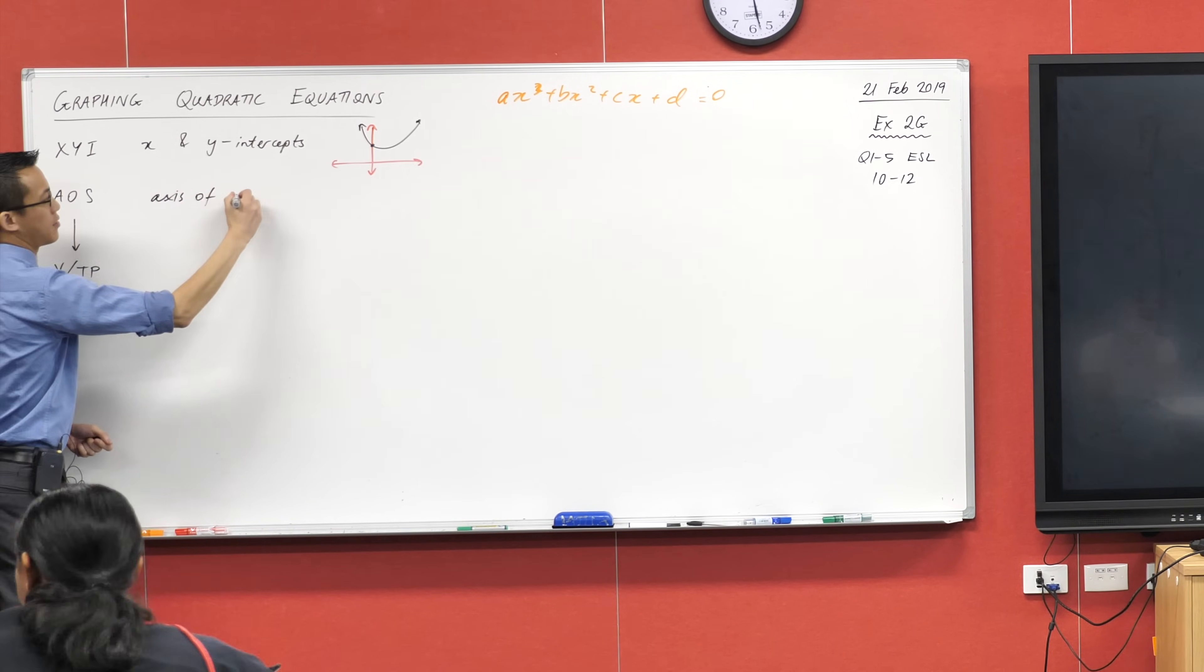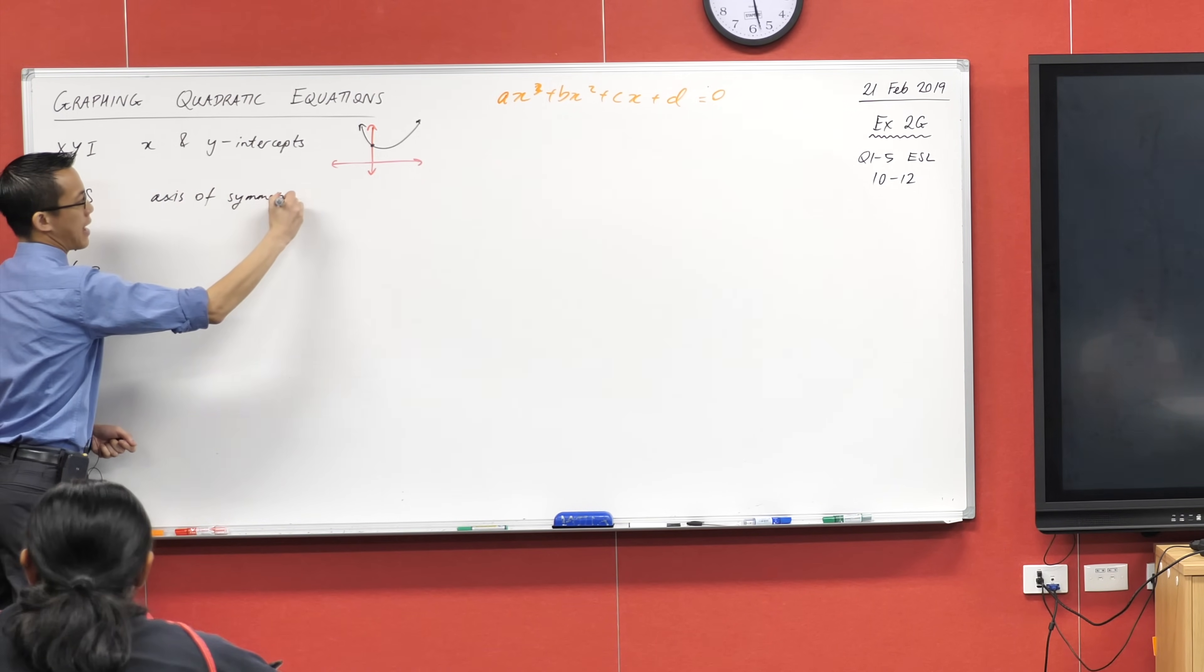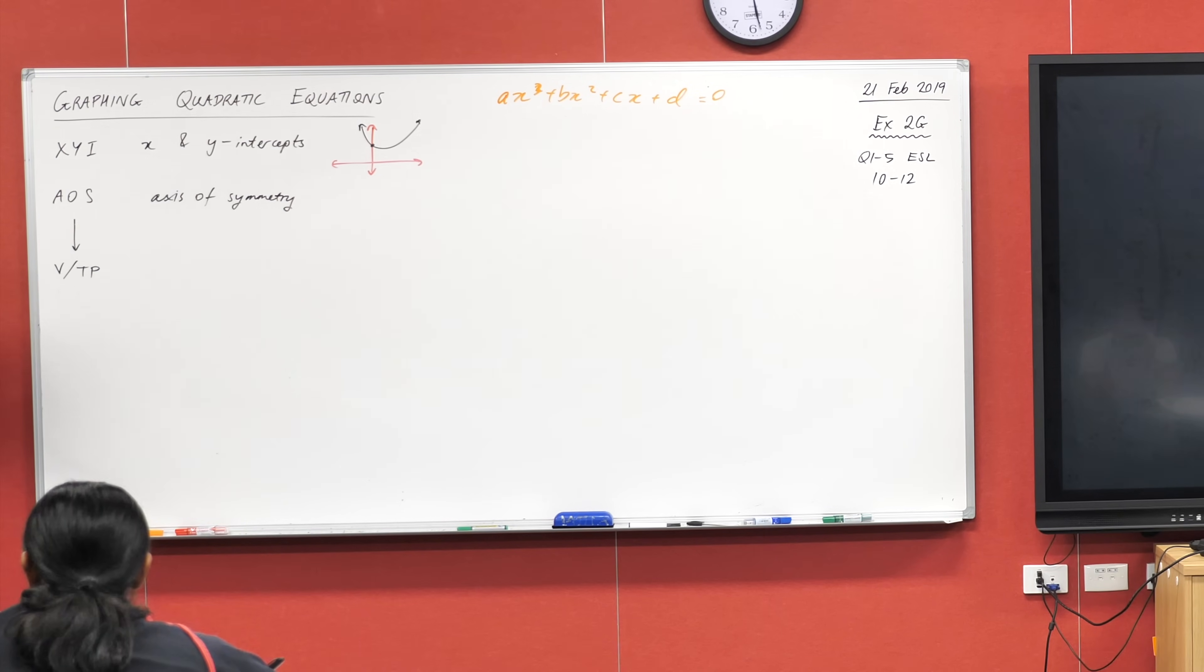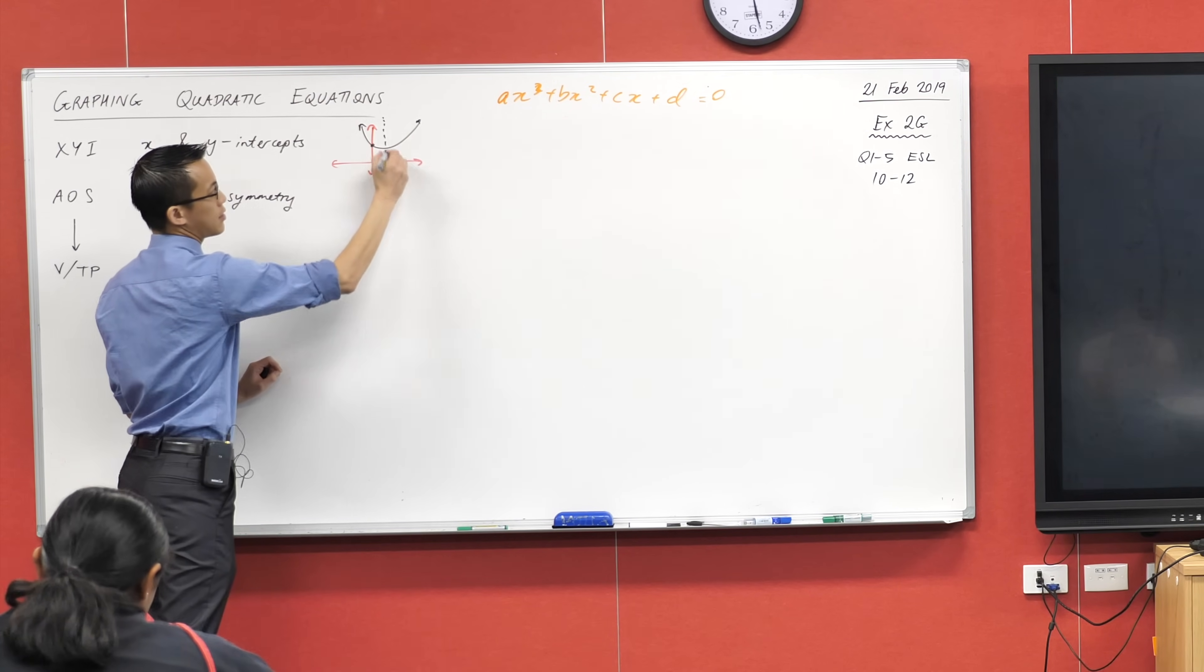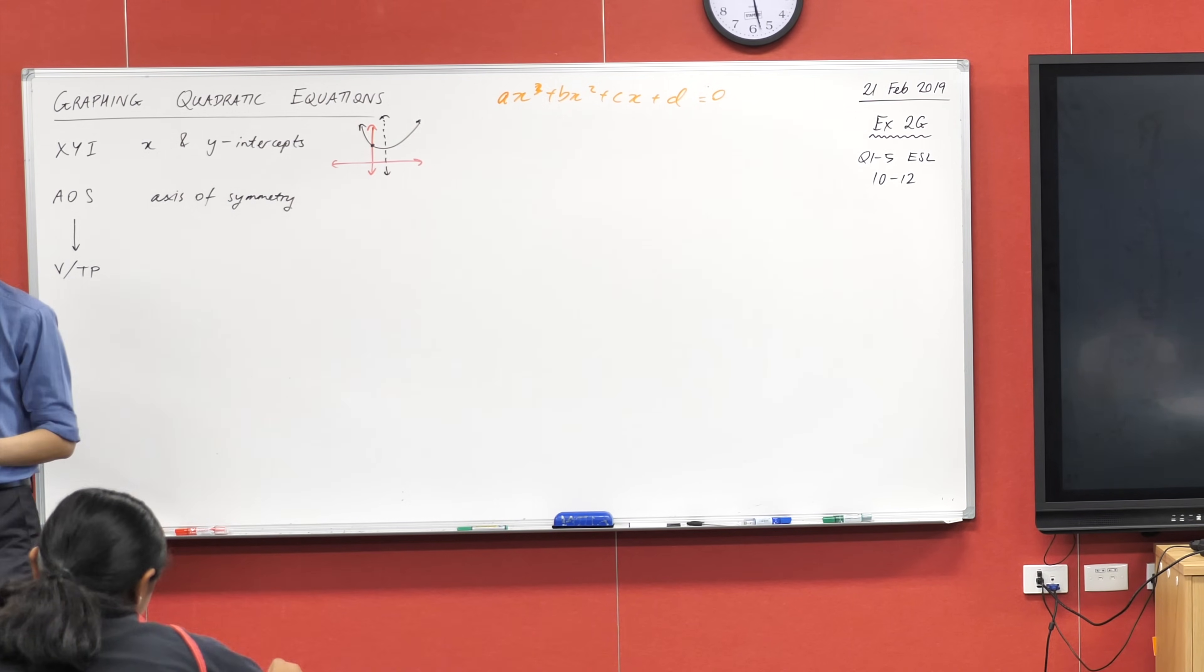So we can find the axis of symmetry, we'll talk about how you do that in a second. And once you find the axis of symmetry, so you're like, oh cool, this is horizontally, this is the middle of the graph.